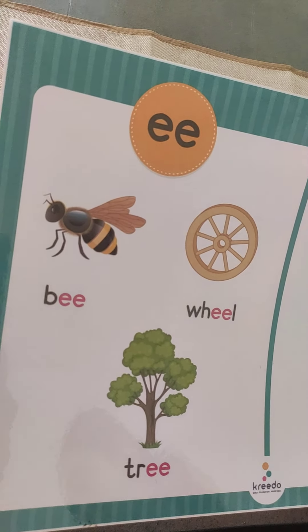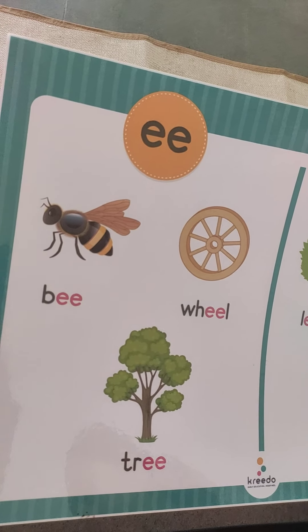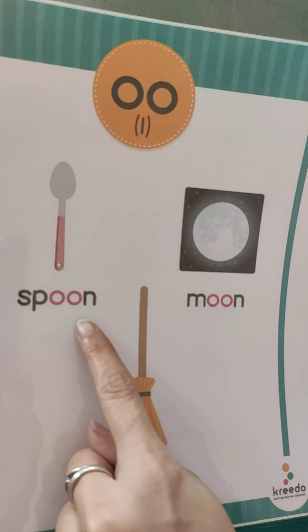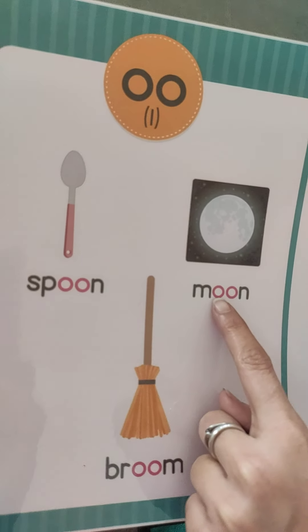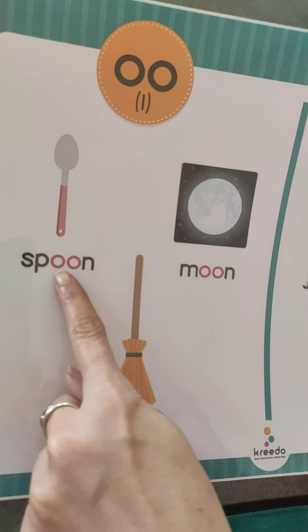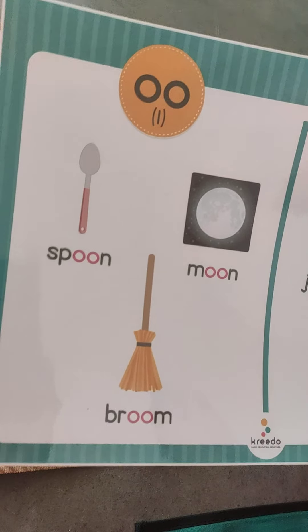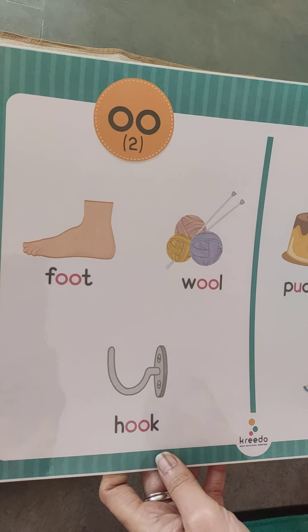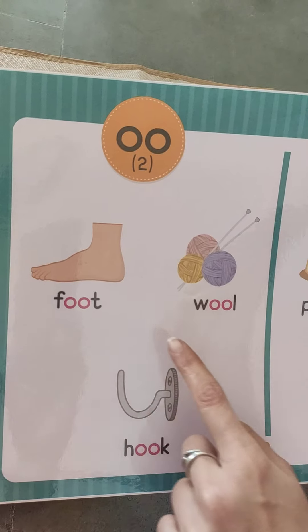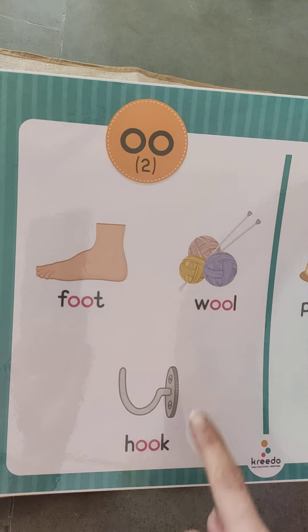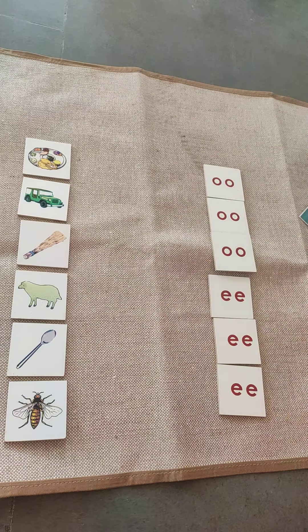And then we had done long double O as well. Do you remember long double O? Ek mein bade u ki aawaz aegi aur ek mein chote u ki aawaz aegi. Spoon, moon, broom — is mein bade u ki aawaz aegi. And then foot, wool, hook — jis mein chote u ki aawaz aegi.